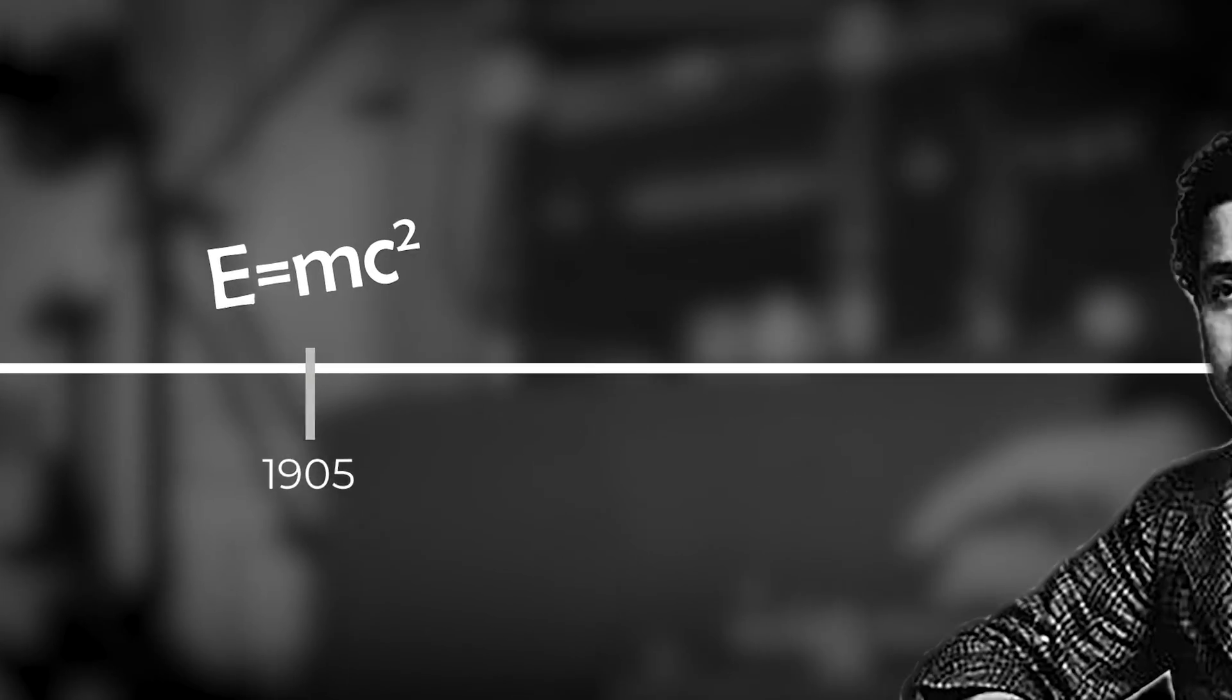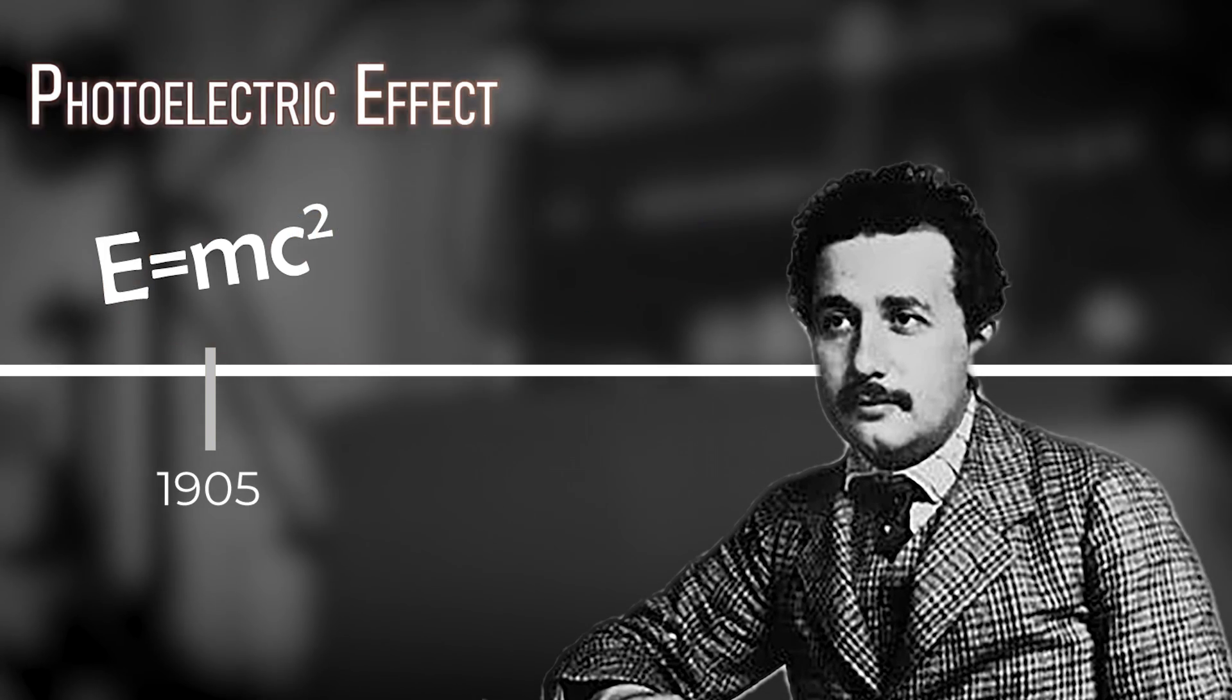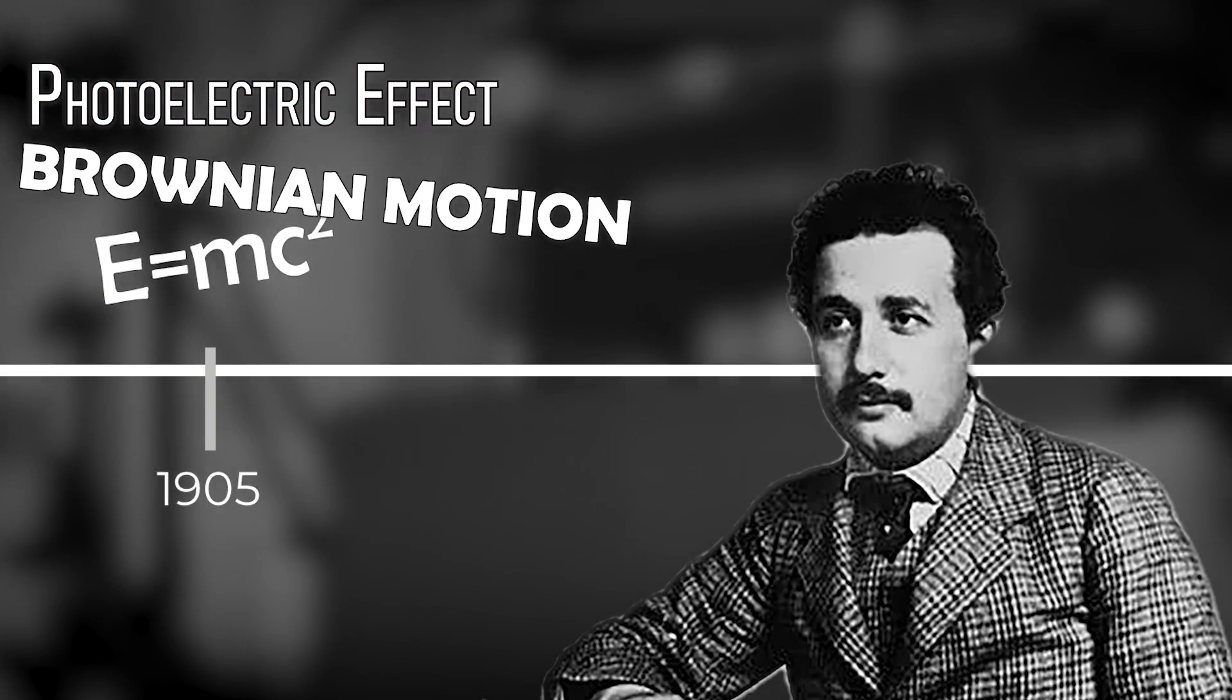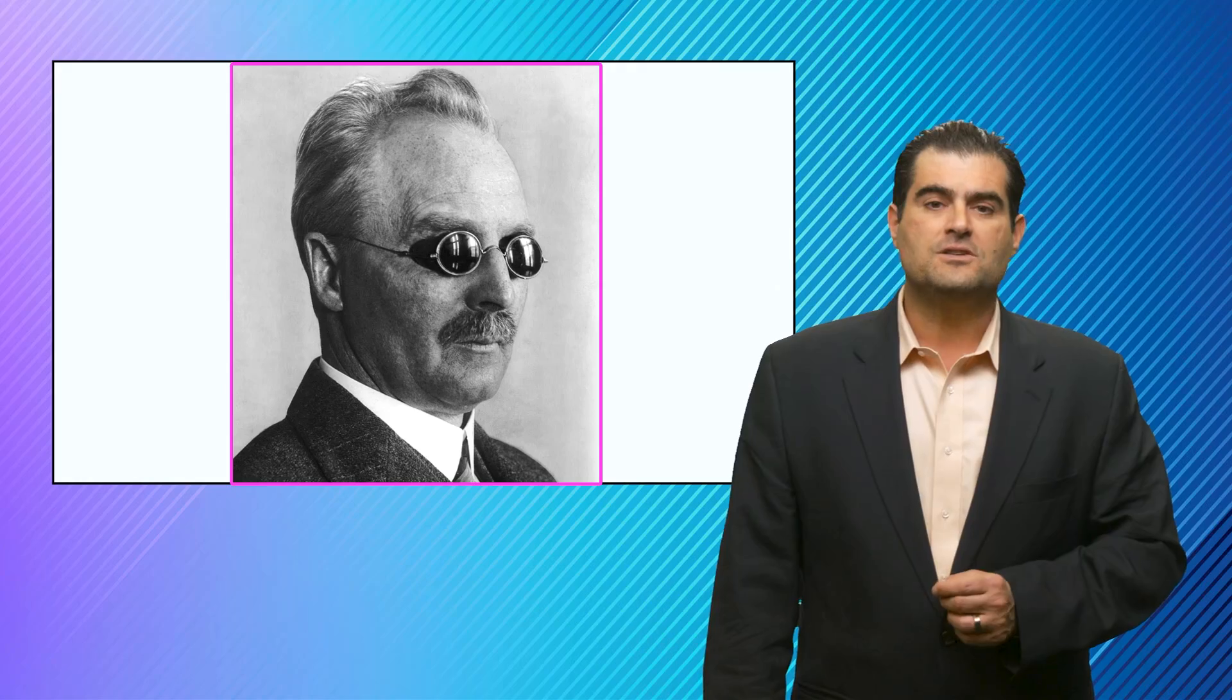However, I remind you that was just seven years after Albert Einstein invented the special theory of relativity, photoelectric effect, Brownian motion, and many other things for which he wouldn't win a Nobel Prize for another 17 years. He won the 1921 Nobel Prize. But Gustav Dalen got his Nobel Prize a decade before.